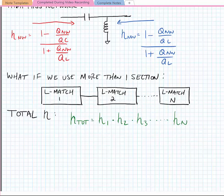So here we have eta_total is equal to eta_1 times eta_2 times eta_3 times eta_n. Or more generally, we can just write this as the total efficiency is equal to the product from i equals 1 to n of eta_i.